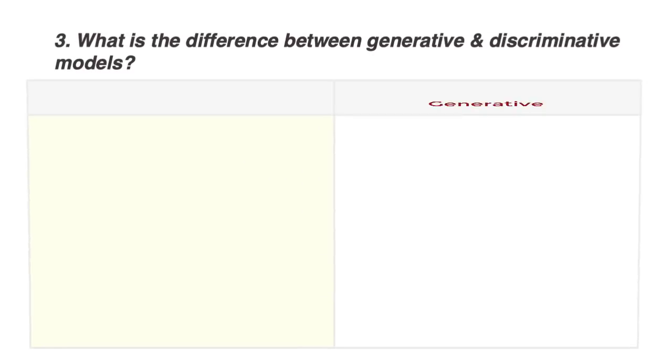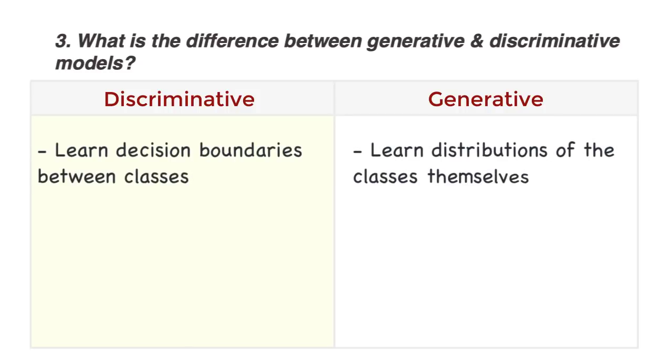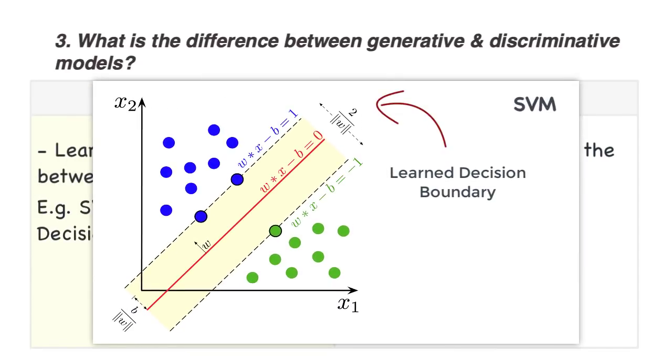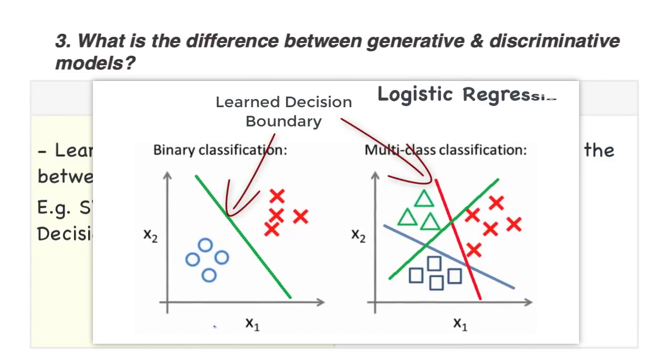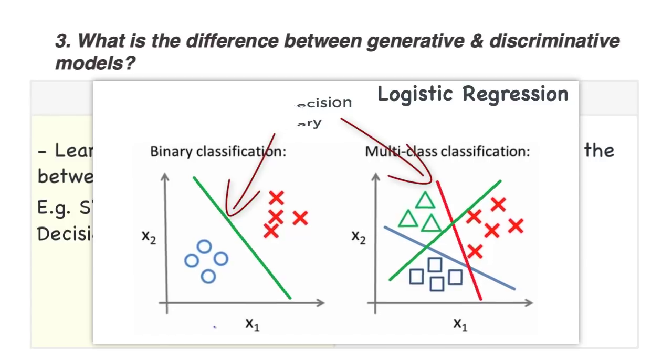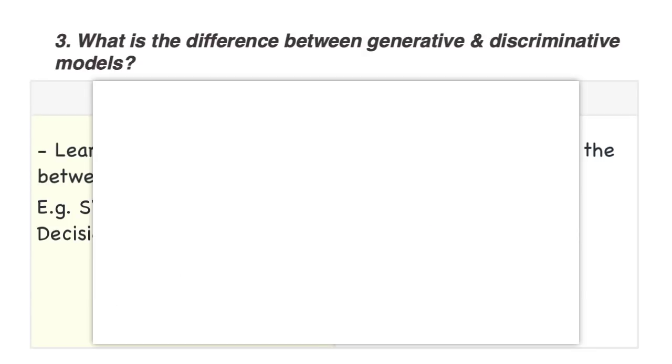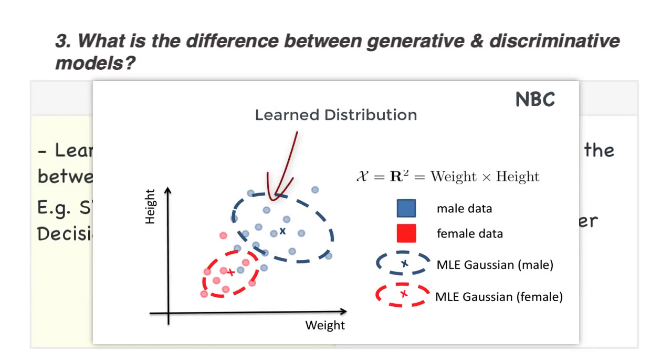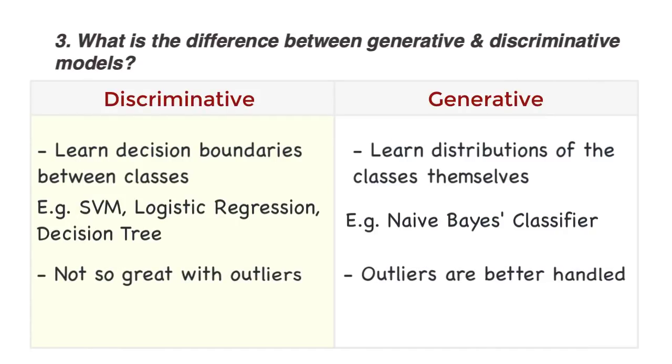What is the difference between a generative and discriminative model? Discriminative models learn decision boundaries between classes. Generative models learn the distribution of the classes themselves. SVM is discriminative because we are creating a decision boundary. It is a maximum margin classifier, after all. Logistic regression is also discriminative as we learn a linear decision boundary. Decision trees are also discriminative as each of the non-leaf nodes will partition space, creating boundaries. Naive Bayes' classifiers are generative as they learn the distributions of the classes themselves.